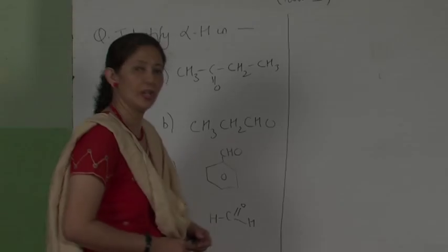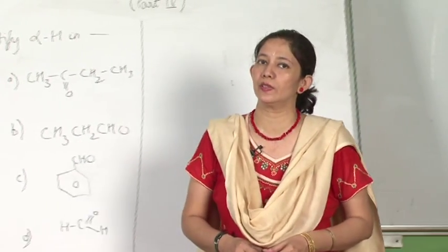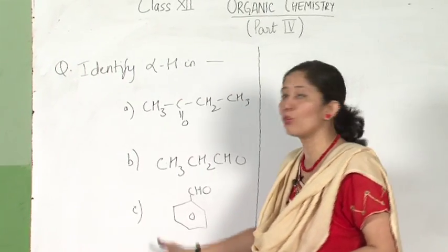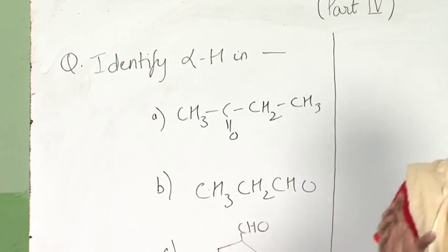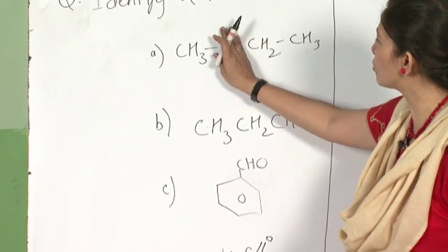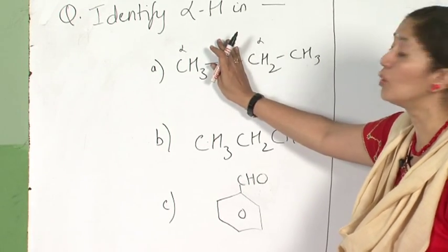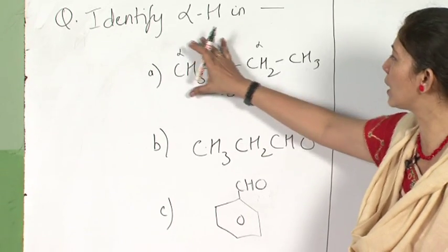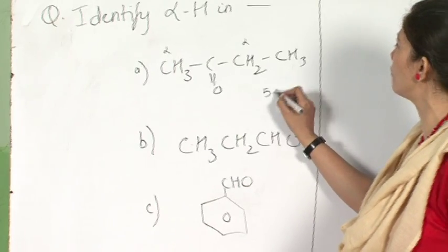I have explained what an alpha carbon atom, beta carbon atom, gamma, and delta are. Now I have given a question: identify the alpha hydrogen in four listed carbonyl compounds. First find out whether the compound contains alpha hydrogen. For the first compound, both adjacent carbons are alpha to the functional group — 3 plus 2 gives 5 alpha hydrogens.